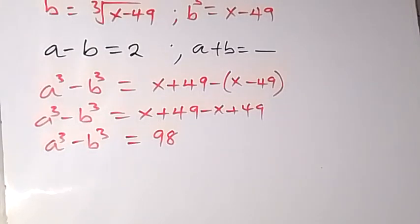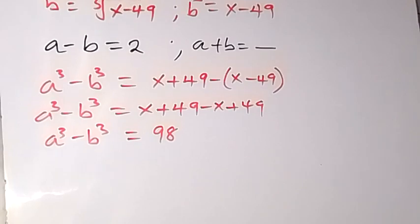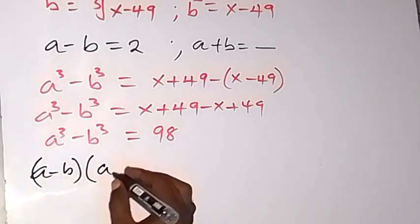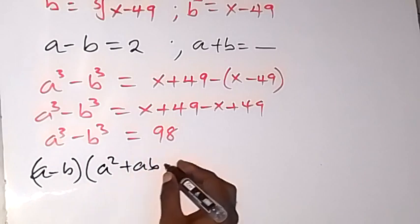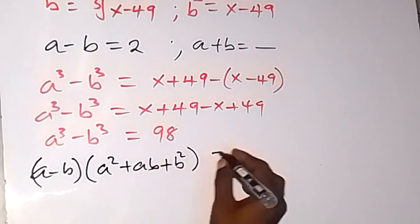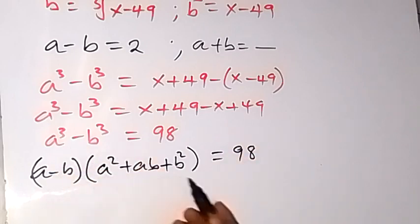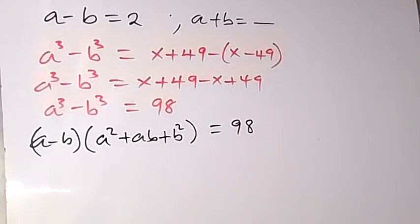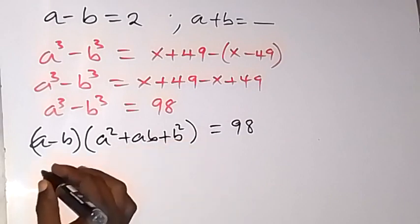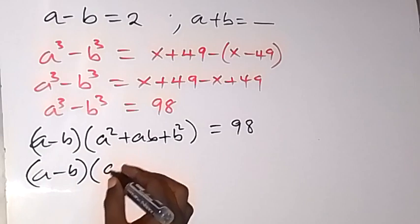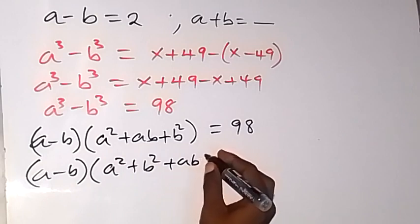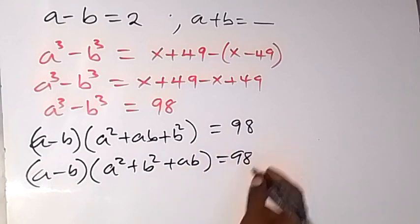We can express the left-hand side using the difference of cubes identity: a minus b, multiplied by a squared plus ab plus b squared, equals 98. Rearranging, we have a minus b multiplied by a squared plus b squared plus ab equals 98.